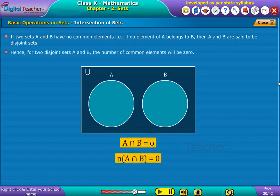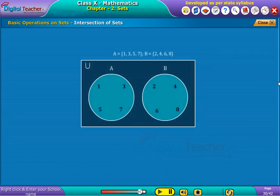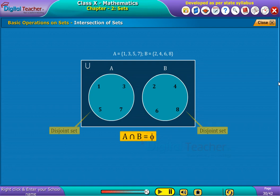Hence, for two disjoint sets A and B, the number of common elements will be zero. Suppose A and B are two given sets. As there are no common elements in A and B, such sets are known as disjoint sets.